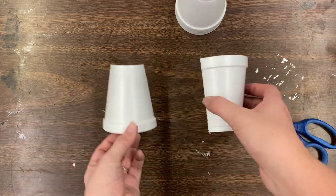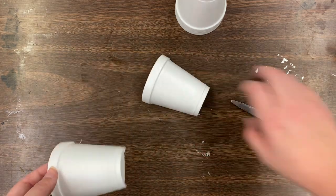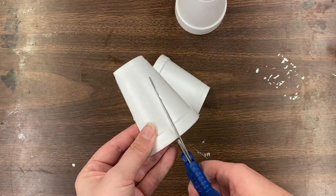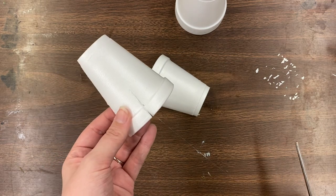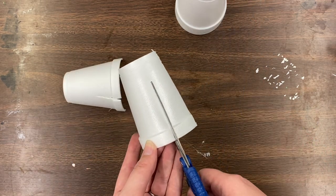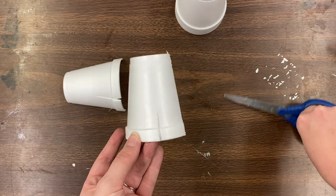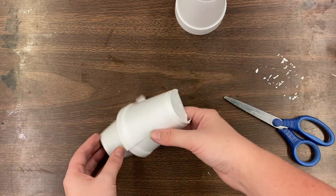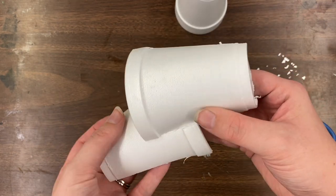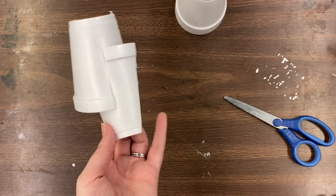So you might be wondering how to build and assemble your different pieces of your styrofoam cup. The easiest way is to cut a slit on one part and then the part that you want to attach, cut a slit into that as well. And then you're going to link these together.